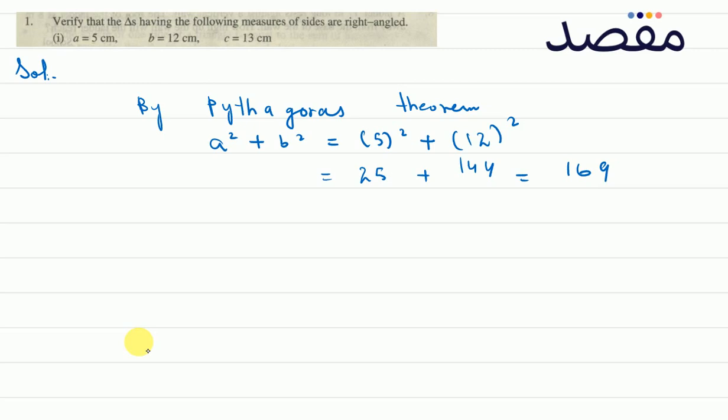Okay, now what do we do? C square, we have 13. We have 169.